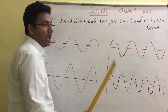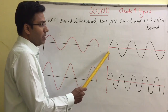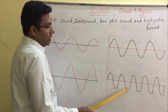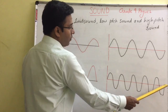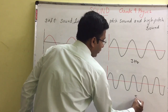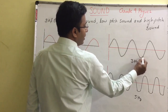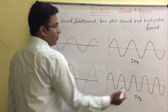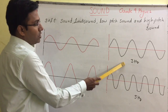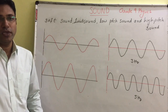Now let us see low pitch and high pitch. Pitch depends upon frequency — that means the number of waves per second. Comparing these two waves: in this wave you have three waves total, giving a frequency of three hertz. In this wave you have five waves, giving a frequency of five hertz. Low frequency means low pitch, and high frequency means high pitch. Frequency and pitch are directly related to each other.